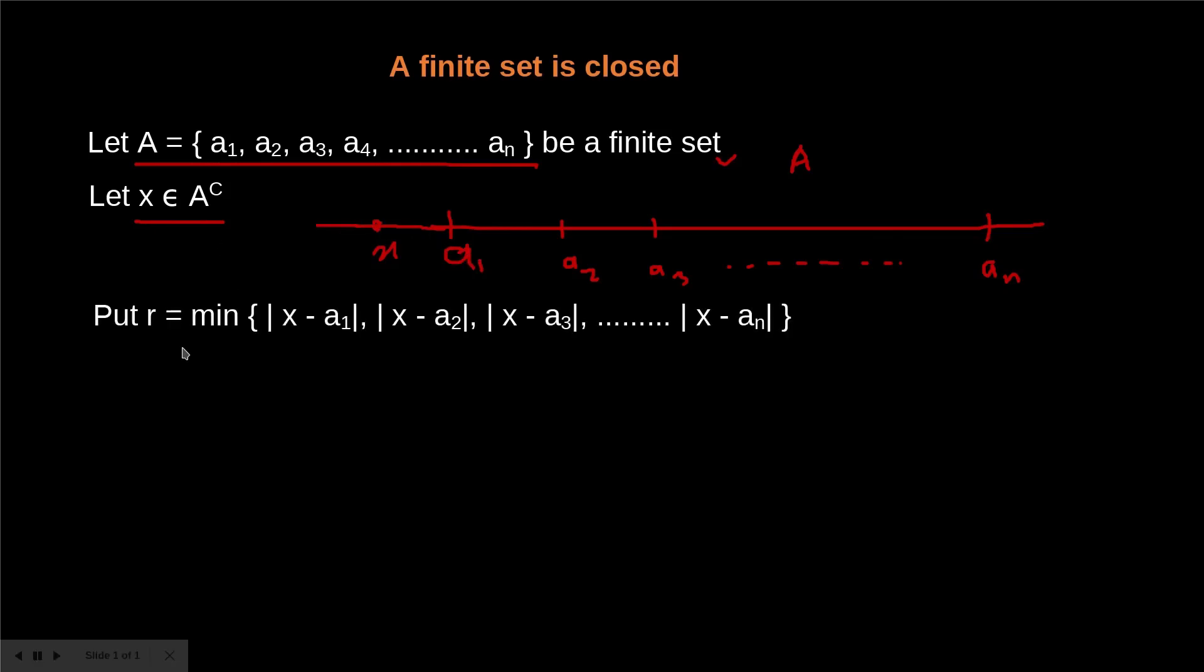And now we have supposed r to be the minimum of these values, modulus of X minus a₁, modulus of X minus a₂ up to modulus of X minus aₙ. And we know that this modulus represents the distance between these two points and we have supposed r to be the minimum of these distances.